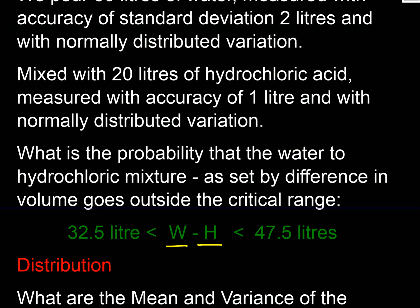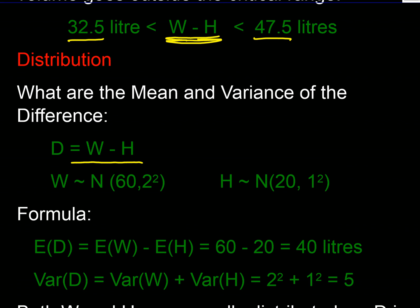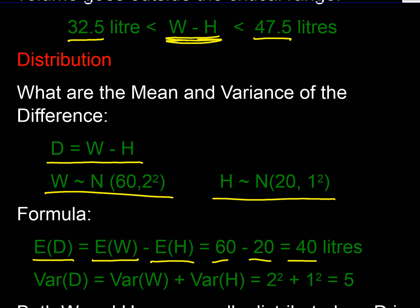Now for a difference. In the same mixture, we want to check the concentration of hydrochloric acid by looking at the difference between the water volume and the HCl volume. We define a new variable: volume of water minus volume of hydrochloric acid. We're interested in this difference being inside a critical region of 32.5 to 47.5 liters — so we want the probability it falls outside that range.